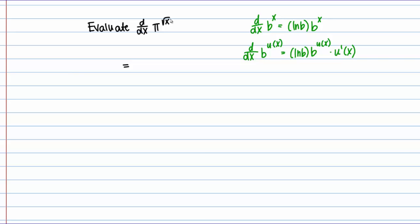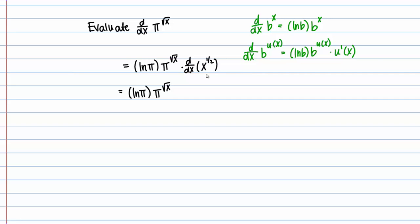Applying the rule, my derivative should be the natural log of B — my base in this case is pi, so the natural log of pi — times pi to the square root of X, times the derivative of the square root of X. I can write the square root of X as X to the 1/2 power, and now I do want to use the power rule on that. So multiplying by that derivative gives 1/2 times X to the negative 1/2 power, and we'll leave our answer like this.